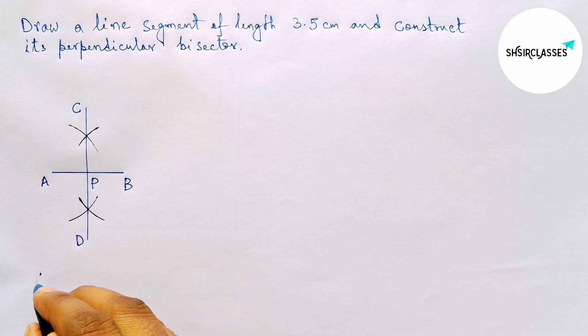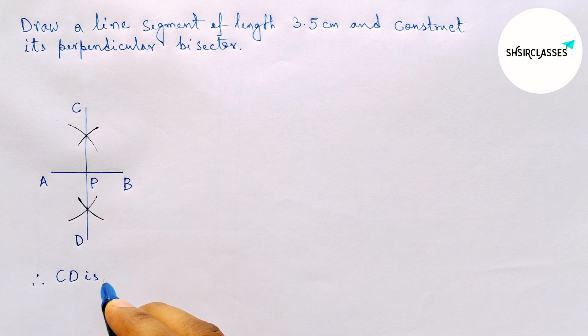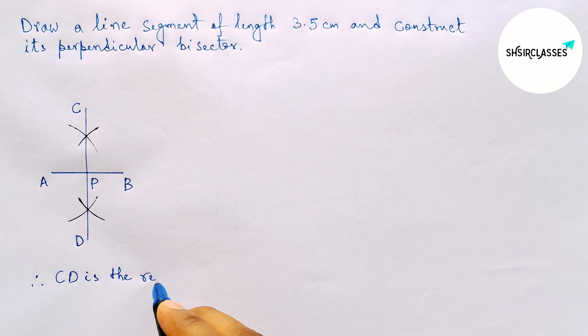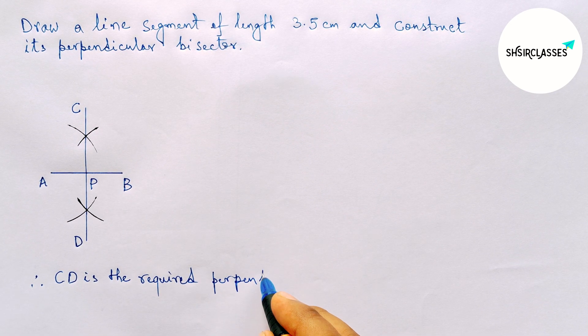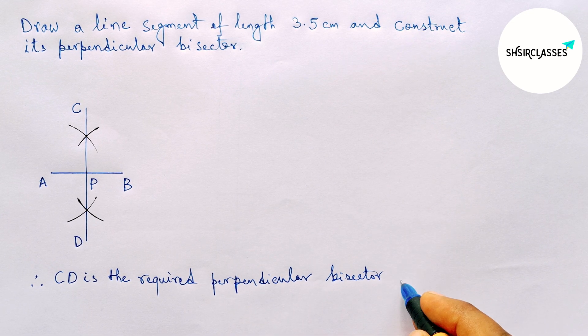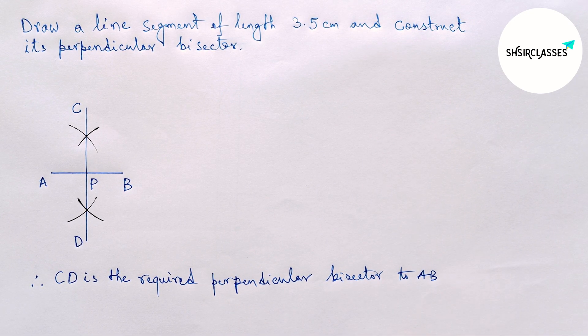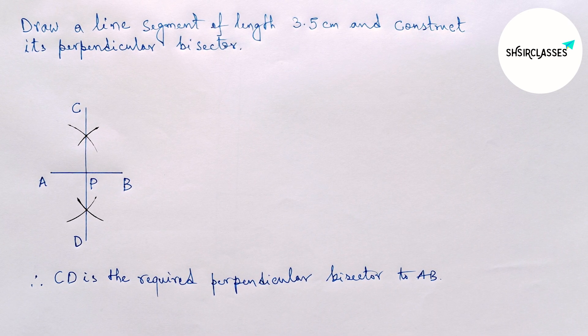CD is the required perpendicular bisector to the line segment AB. By this way you can construct a perpendicular bisector to a given line. Now I'm going to check whether the line AB is perfectly bisected